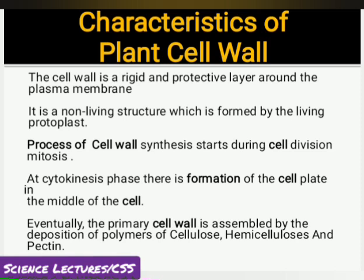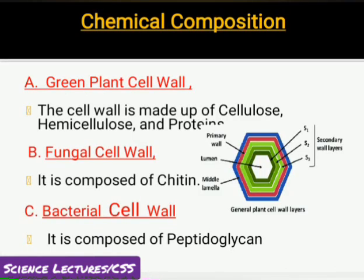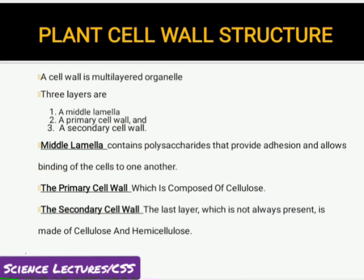The cell wall is composed of cellulose, hemicellulose, and pectin. The chemical composition of the cell wall differs across groups of organisms. In green plants, the dominant components are cellulose, hemicellulose, pectin, and protein. The dominant organic molecule overall is peptidoglycan. A diagram showing three layers of green plant cell wall uses blue color to represent the primary wall, secondary wall, and middle lamella.